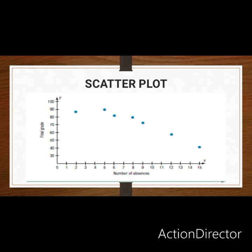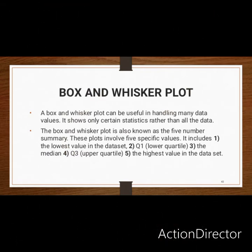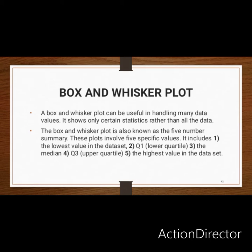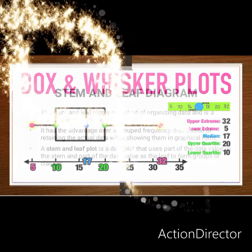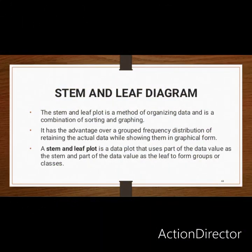The next method is box and whisker plots, which is used for handling many data values. It shows only certain statistics rather than all the data. In our next class, you will learn how a box and whisker plot is constructed. From it, you can identify the upper extreme value, the lower extreme value, the median, the upper quartile, and the lower quartile. Another method is the stem and leaf diagram, which is a method of organizing data and is a combination of sorting and graphing.